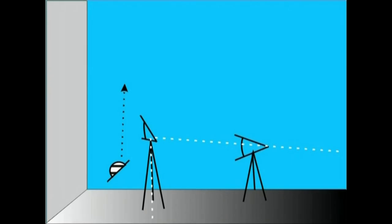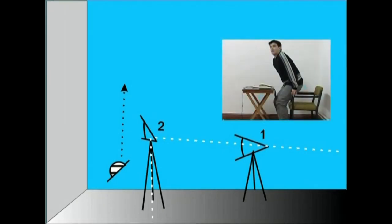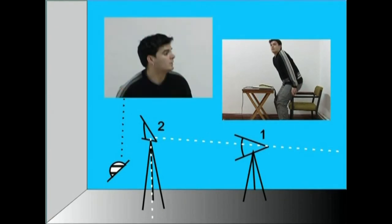Angelu zuzeneko kokaguneak ere albidetzen digute altxatze zein makurtze bat filmatzea. Lehenengo kokagunetik, plano orokorra medio, aktorea makurtuta filmatuko dugu. Alako batean, aktorea altxatu egiten da eta burua kuadroaren goialdetik ateratzen zaio. Bigarren kokagunetik, angelu zuzeneko beste kokagunetik eta kamera apurbat gorago dugula, aktorearen mugimenduaren amaia filmatuko dugu.